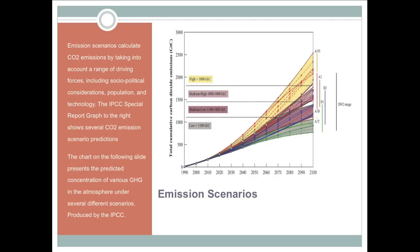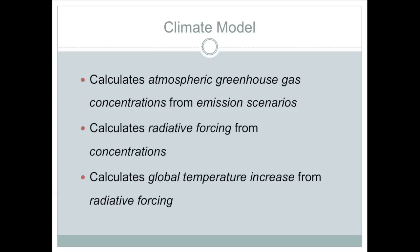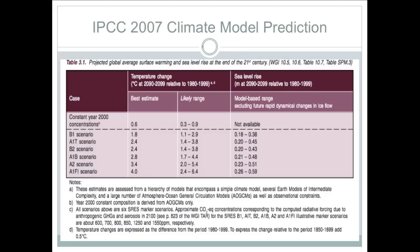You can see the ranges of carbon dioxide emissions predicted by each scenario in this image provided by the IPCC. The A2 scenario leads to a world with more carbon dioxide in the atmosphere than the B1 scenario. Emission scenarios are the input used by a climate model to calculate atmospheric greenhouse gas concentrations. These concentration predictions are then used to calculate radiative forcing, which in turn allows the climate model to calculate the end product: global temperature change.